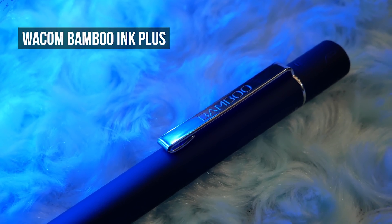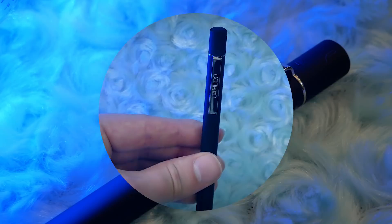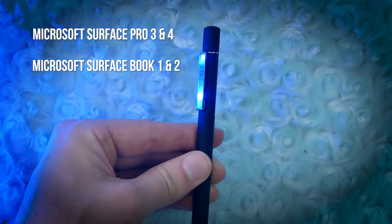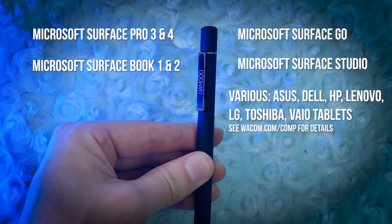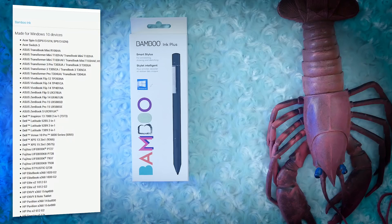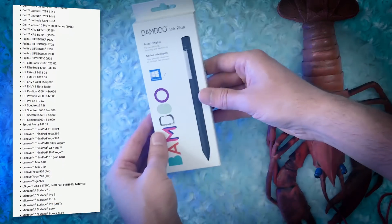The Bamboo Ink Plus is a pen that can be used to draw and annotate on a Windows 10 computer. It can be used on the Microsoft Surface Pro, the Surface Book, Surface Go, Surface Studio, and various other types of Windows 10 tablets.